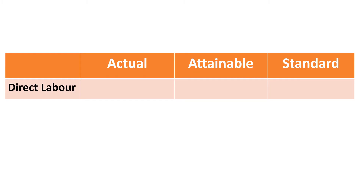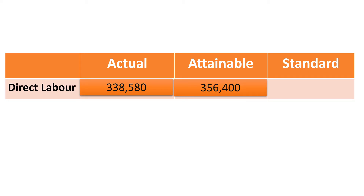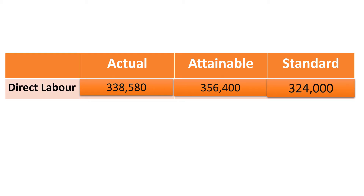Next, we calculate direct labor variances. To produce 5,400 actual units, they used 5.5 labor hours per unit at an actual rate of 11 rupees 40, giving an actual cost of 338,580. The attainable figure is actual hours (5,400 × 5.5) multiplied by the standard rate of 12, giving 356,400. The standard is 5,400 units × 5 hours per unit × 12 rupees, giving 324,000.